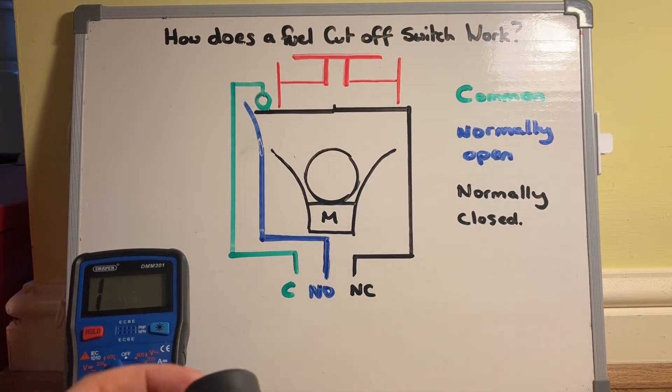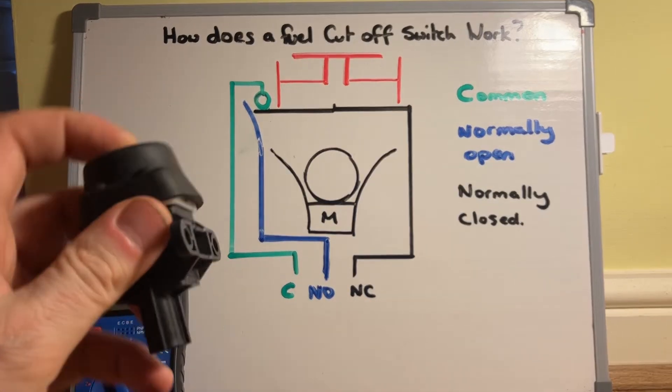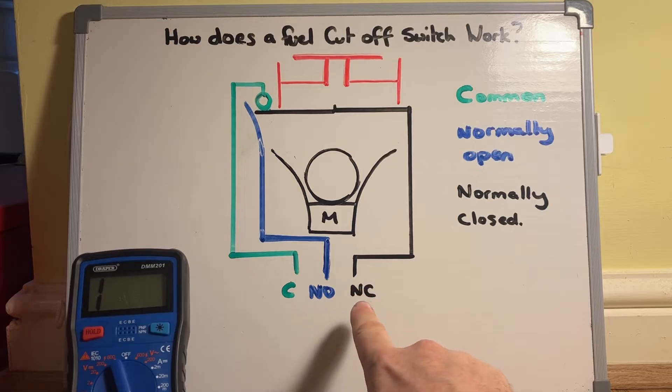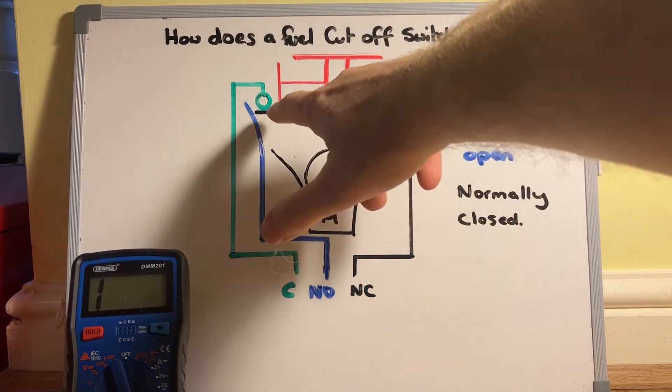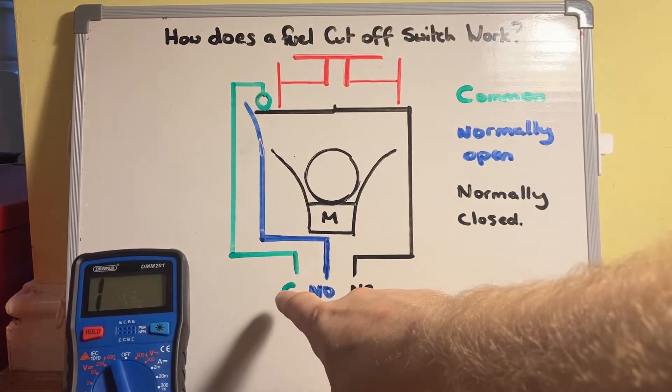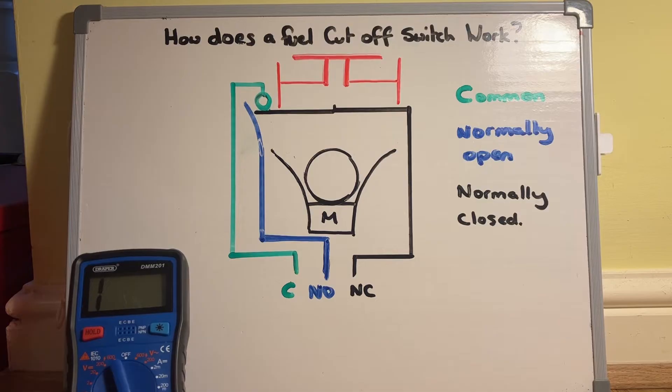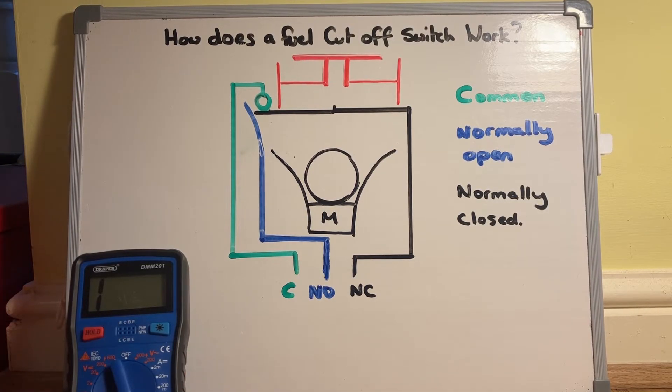So in normal driving conditions the button is pressed down, and what is happening is we've got the normally closed scenario. We've got power going around here through these contacts and then on to this contact and round to common. So that is the normal running condition when the car's getting fuel to the fuel pump, running normally.